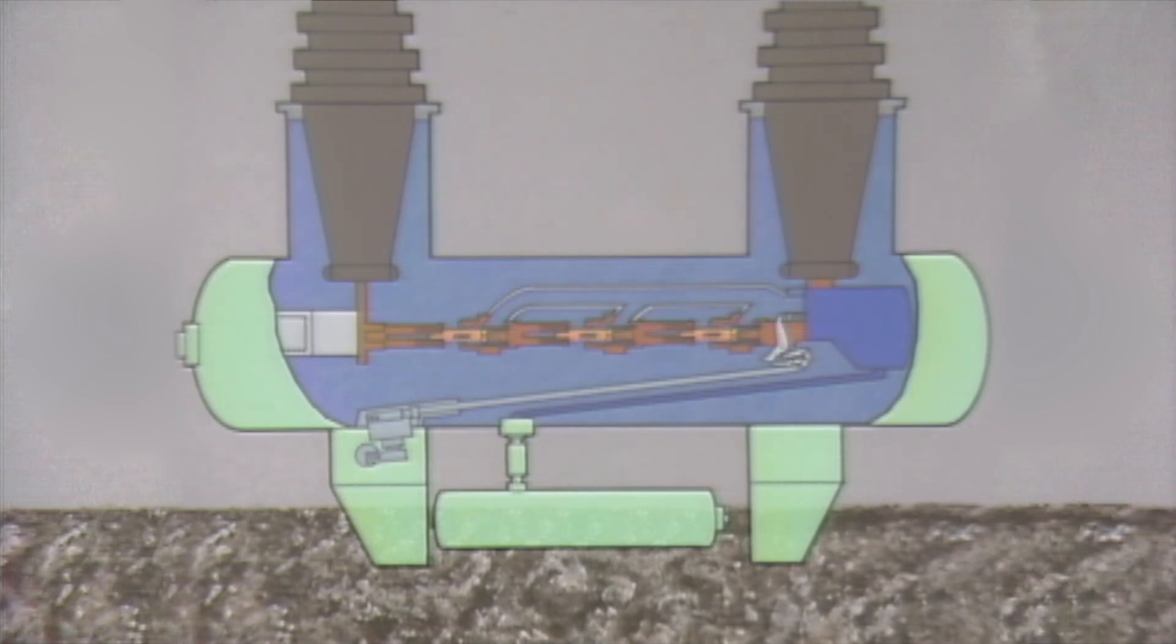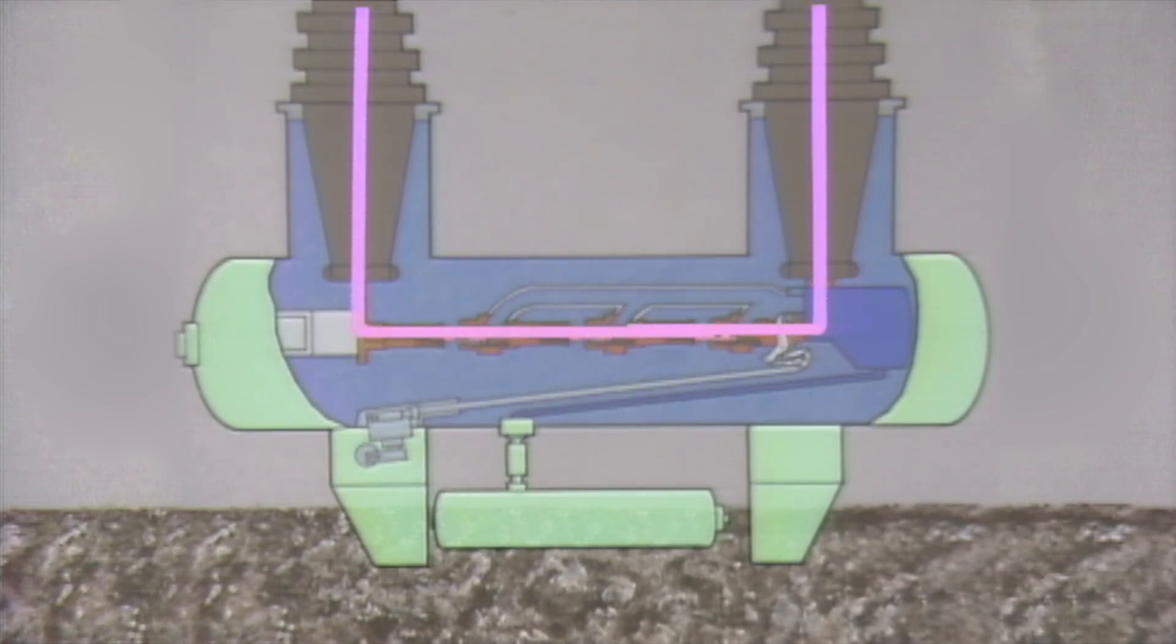Very briefly, the breaker works this way. When the breaker is closed, the current path is through the conductors insulated by bushings and the contacts.